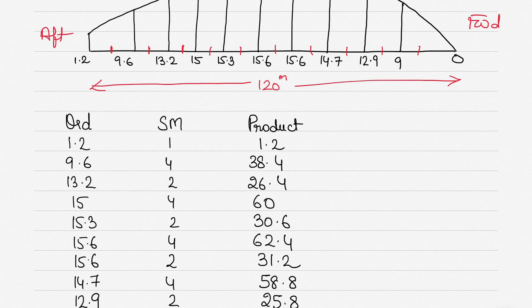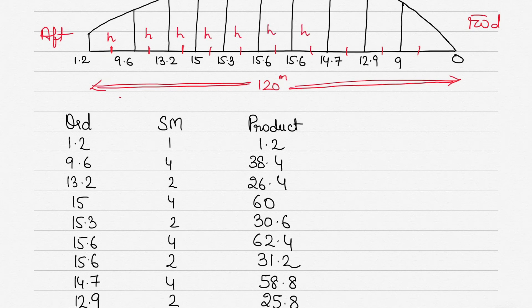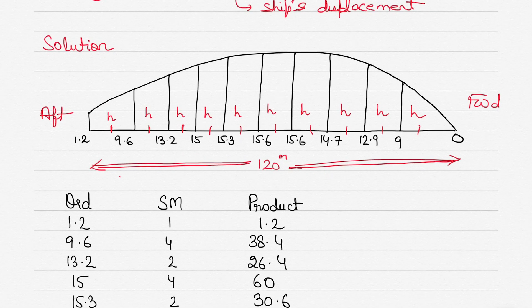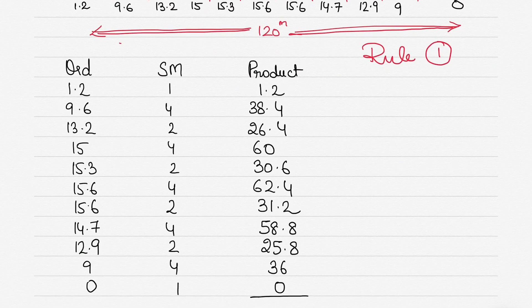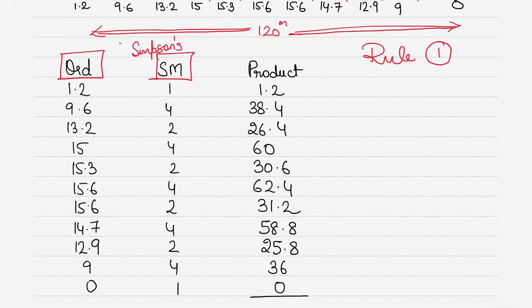So h is the distance between each ordinate — each ordinate is separated from the next by an equal interval called h, which in this case is 12 meters. Then you have to decide on the rule to apply. Since we have 11 ordinates, we can apply Simpson's Rule Number 1. You write down the ordinates and the Simpson's multipliers (SM) based on Rule 1.